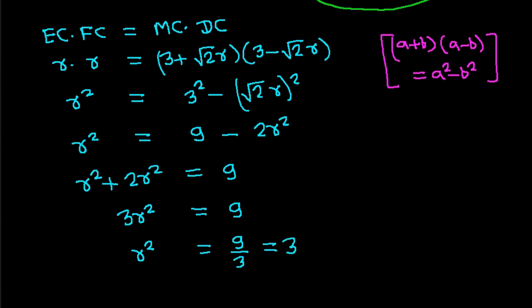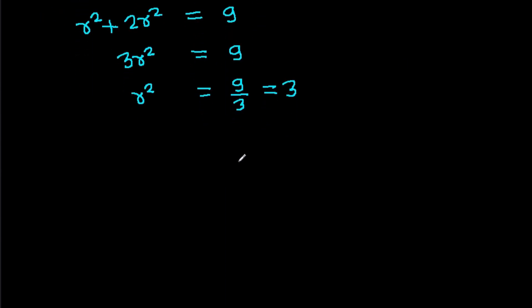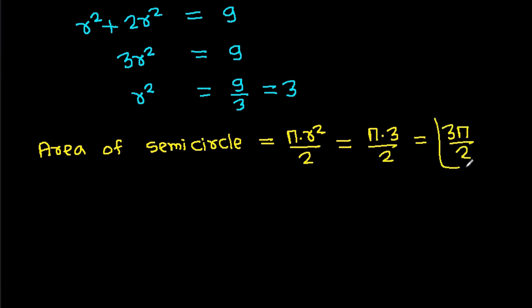So R² = (3 − √2·R)². Solving this gives R² = 3. Therefore the area of the semicircle is π·R²/2 = π·3/2 = 3π/2.